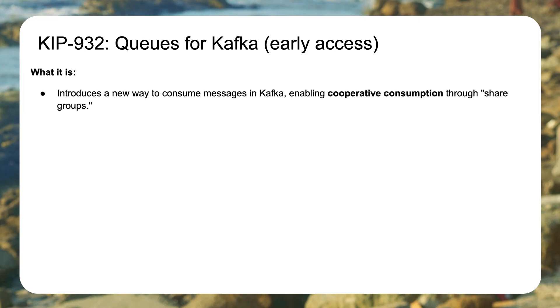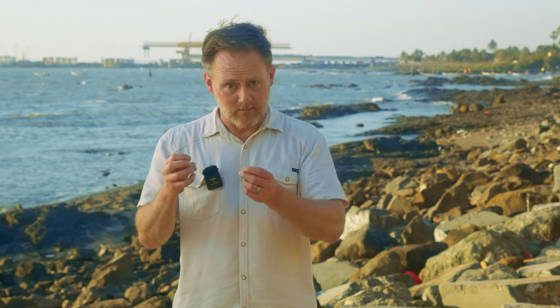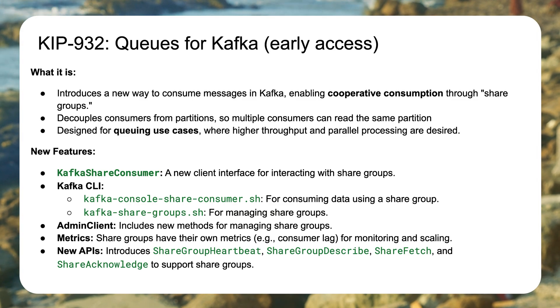KIP 932 — let me tell you what 932 is not. It is not complete queue functionality in Apache Kafka. That's something that's been talked about for years and is now officially in progress, but this isn't the whole thing. This is an experimental feature to start the process. KIP 932 introduces a feature called share groups. A group of consumers defined as a share group will be able to, for example, all consume from the same partition. Historically, a single consumer instance could only consume from one partition and no other instances could touch it, giving us guaranteed ordering. With queues, we're willing to give that up so we can radically scale out the number of consumers reading from one topic. This is the beginning of that — share groups as an experimental feature.